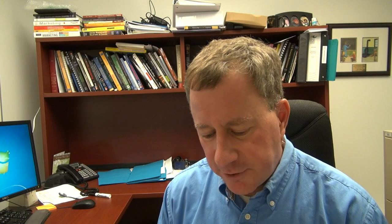Exhibit 8.1 from the book shows good examples of different types of observable things: physical, verbal, expressive, spatial, temporal, physical objects, and verbal and pictorial records. We also talk about neurological activities, which is measuring brain waves and similar things. Internet activity is a pretty common one now, especially when we look at things like Facebook. And geographic information — using the Internet and things like Google Maps, we can find a lot of geographic type information.